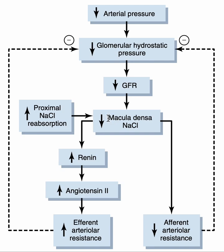Within the distal convoluted tubular cells, we have specialized cells known as macula densa. These are specialized distal convoluted tubular cells that sense the amount of sodium and chloride within the nephron, mainly at the level of the distal convoluted tubule. When the GFR is decreased, there is decreased flow of filtrate within the nephron, allowing the ascending loop of Henle to reabsorb more sodium and chloride, so the delivery of sodium and chloride to the macula densa is reduced.